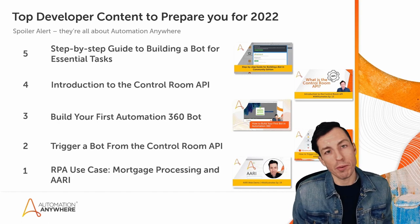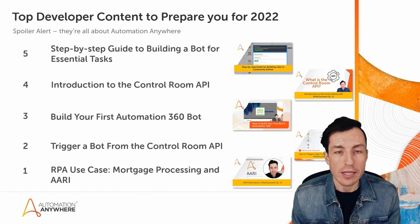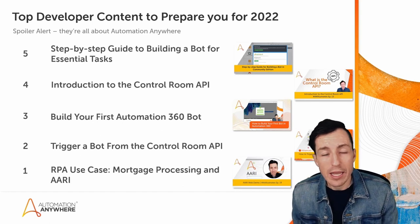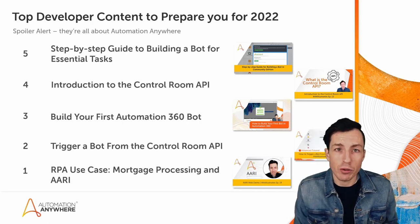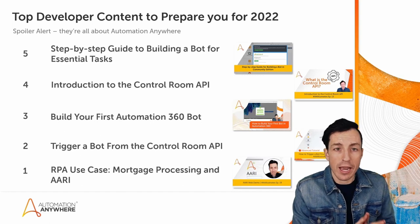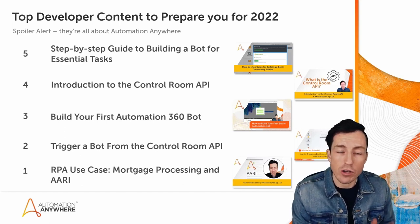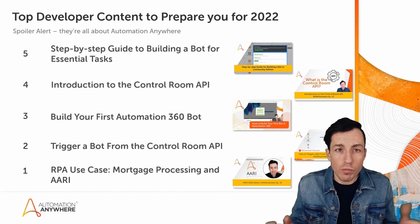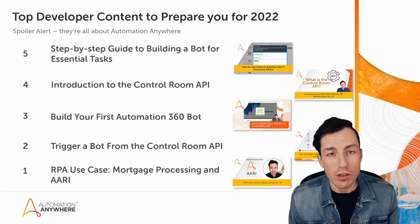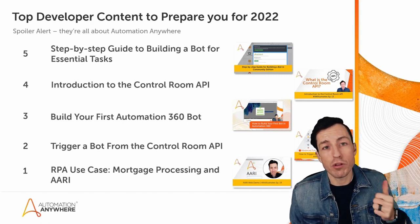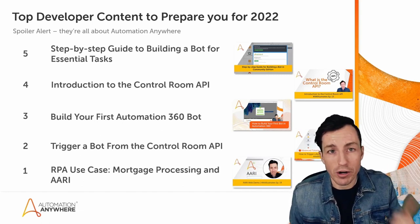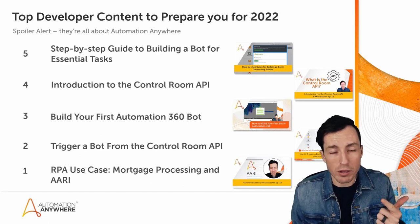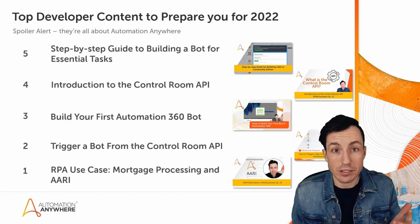The number one most popular video from 2021 that'll help you prepare for 2022 is an RPA use case on mortgage processing using AARI. In this tutorial we go through the full process of building out an AARI process. AARI is Automation Anywhere's Robotic Interface — it's the human-bot collaboration capability you can build within your processes. We go through building out some AARI forms and importing bots that we'll be using.